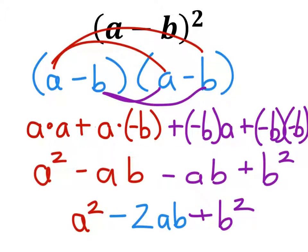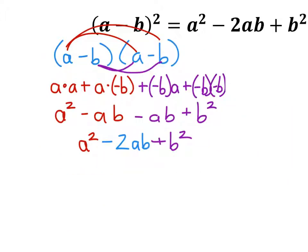Notice what this does is give us a negative ab here and a negative ab there — that gives us two of those, which changes the expression. If we simplify, that gives us a squared minus 2ab plus b squared, and there's no other simplification. That right there is what we were trying to show: why that a minus b squared equals this quantity here. So that's what we were trying to say. Thank you.